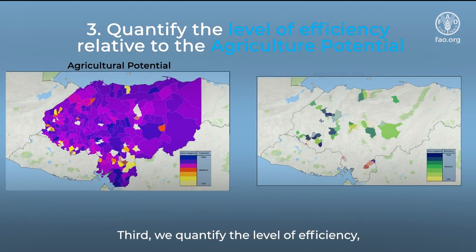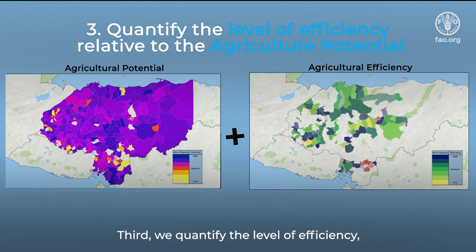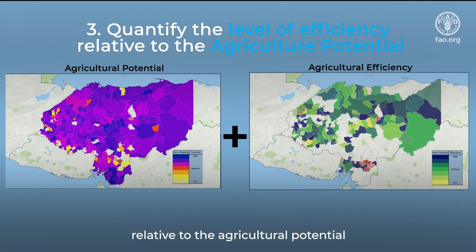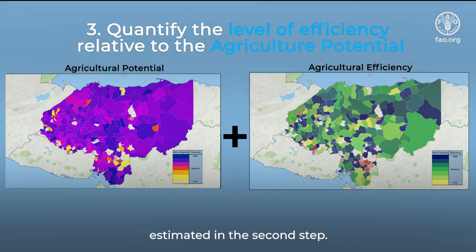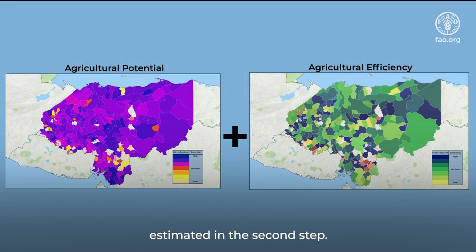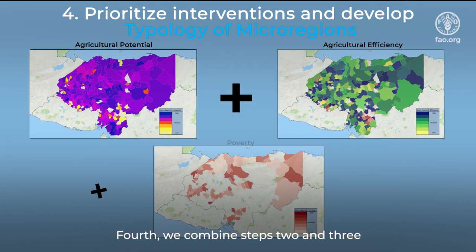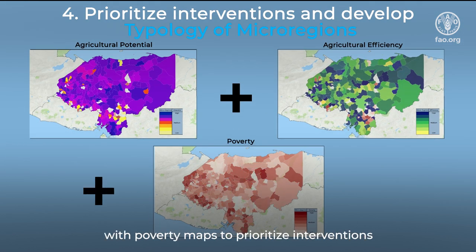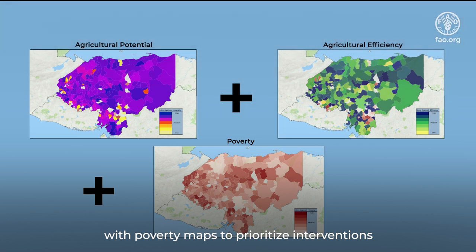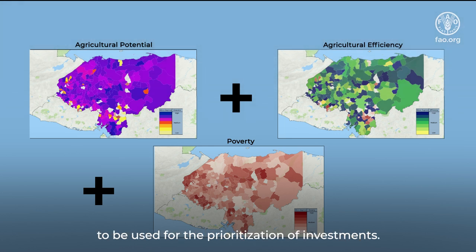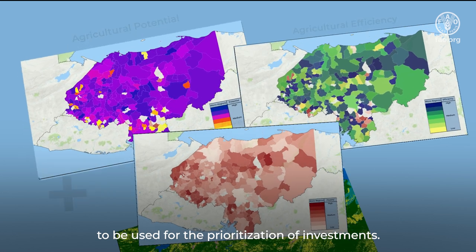Third, we quantify the level of efficiency relative to the agricultural potential estimated in the second step. Fourth, we combine steps two and three with poverty maps to prioritise interventions and develop the typology of micro-regions to be used for the prioritisation of investments.